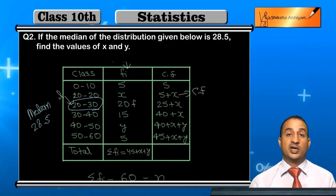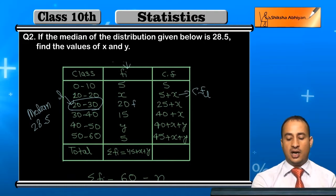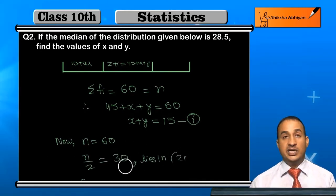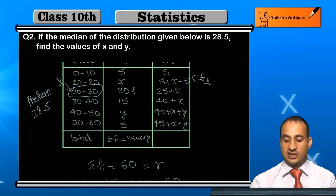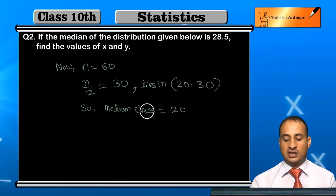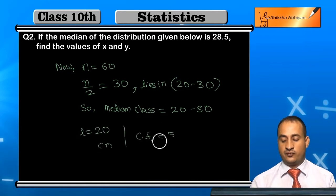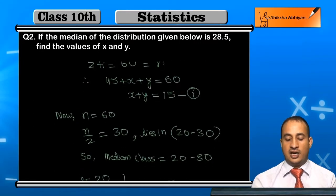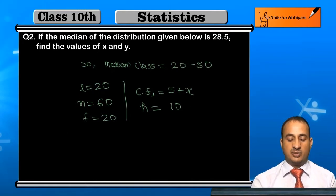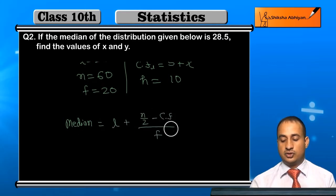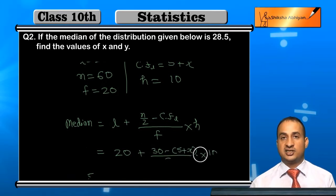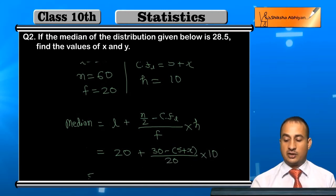Now n = 60, so n/2 = 30. This lies in the median class 20-30. The lower boundary l = 20, the cumulative frequency of the preceding class cf = 5+x, the frequency of the median class f = 20, and the class size h = 10. We now substitute all these values into the median formula.